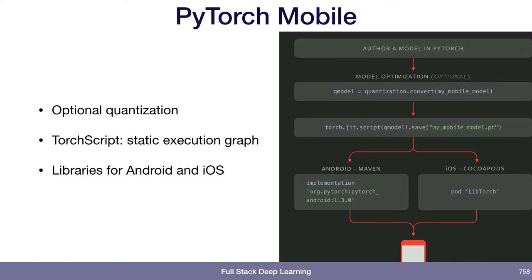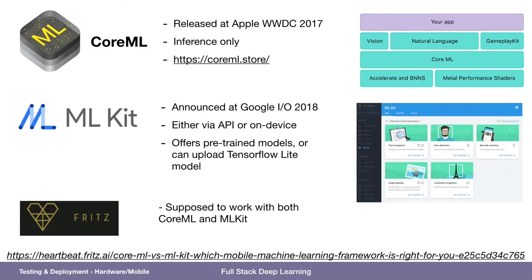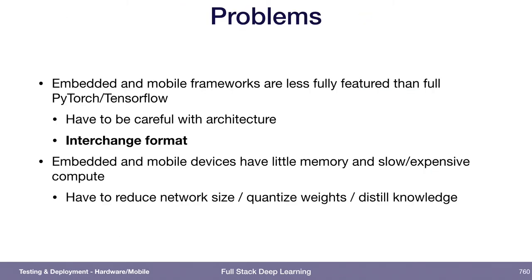It's not feature parity — there are going to be models you can train in PyTorch that you will not be able to convert to TorchScript. A way to think about this is in terms of some kind of global interchange format for deep learning models.